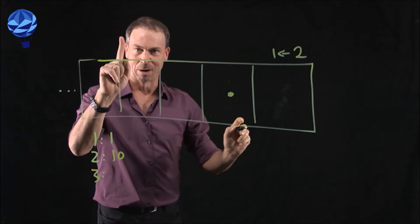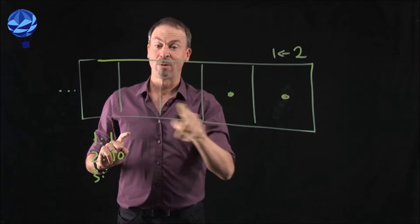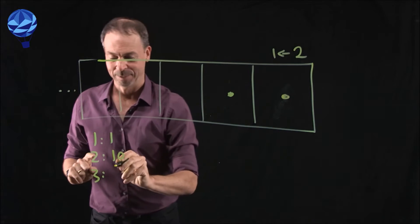Here comes the third dot. Always the rightmost box. Zoom. So what's the code for three? 1-1. All right.